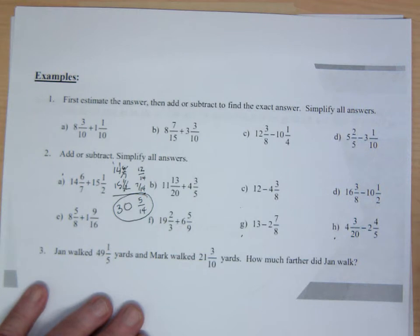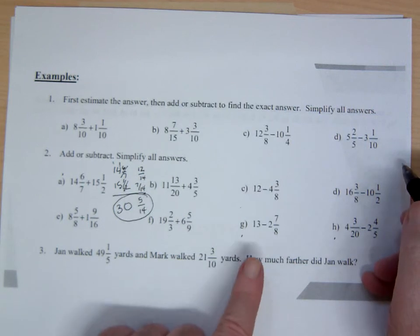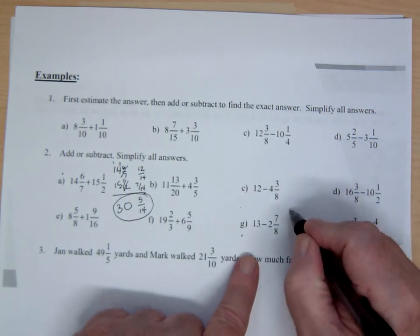When I add those numbers, I get 0 because they sum to 10. And I will carry again. And I get 30. So the answer to this problem is 30 and 5 over 14 in lowest terms.